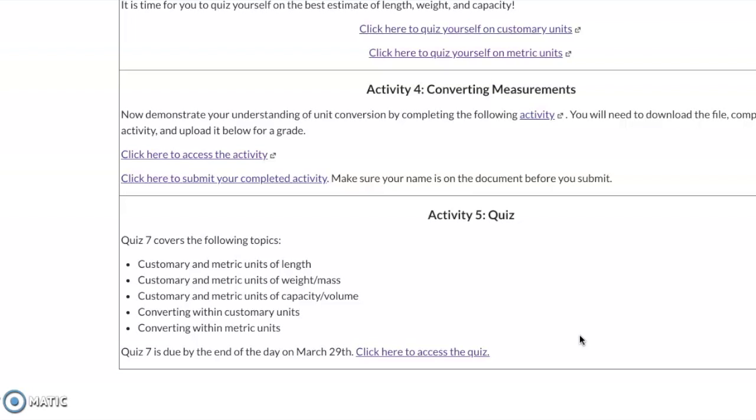Now remember you will not have a binder check so I will not be checking your notes. I will not be checking homework. But what I will be checking is the activities that you turn in. So for this coming week it'll be activity four and you'll still have your quiz with activity five.